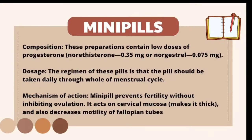The next type is the mini pill, also known as the micro pill, which contains only progesterone in low doses. The regimen requires it to be taken throughout the entire menstrual cycle. Its mechanism of action prevents fertility without inhibiting ovulation — it acts on cervical mucosa, making it thick and thus preventing sperm entry into the female genital tract, and also decreases motility of the fallopian tube.